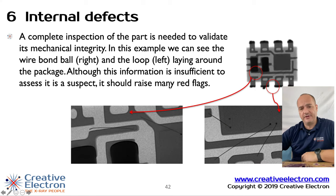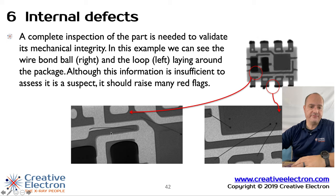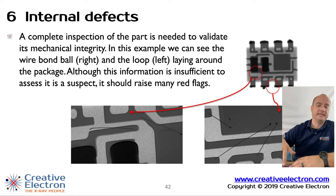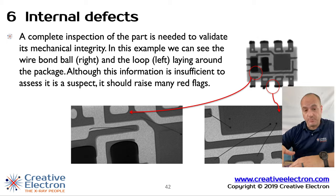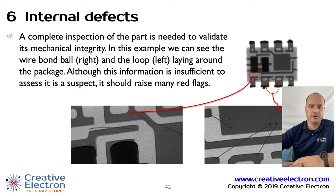Internal defects are a very good indication that something happened to that component. In this example, we have a broken wire bond inside the package — that's definitely a failed part, which can also indicate it's a counterfeit. It might have been stored incorrectly, or pulled from a board where excess heat and mechanical shock caused the wire bond to come loose.